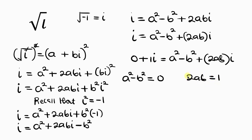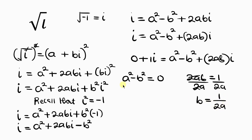From 2ab = 1, we make b the subject by dividing both sides by 2a, giving b = 1/(2a). We'll substitute this into the equation a² − b² = 0, replacing b with 1/(2a).